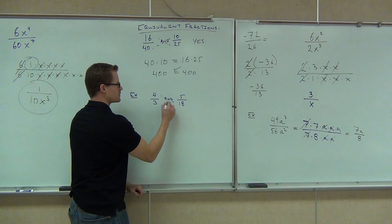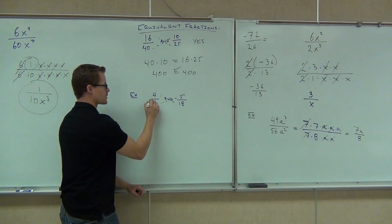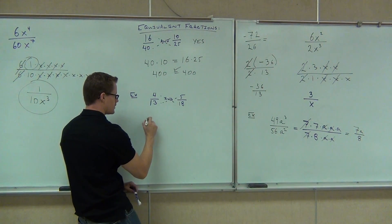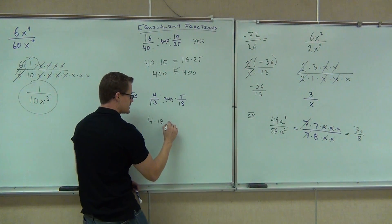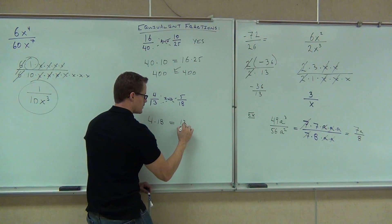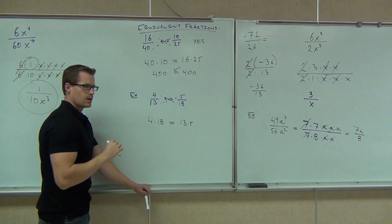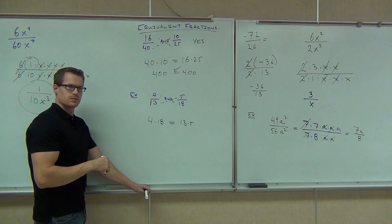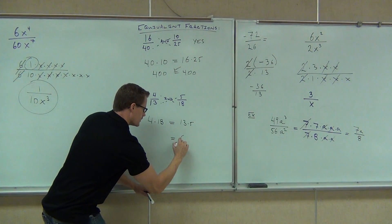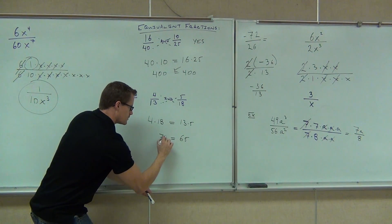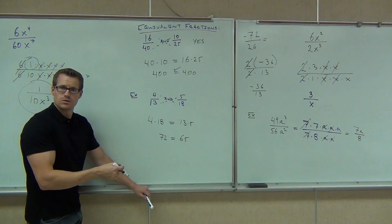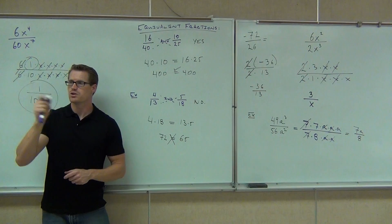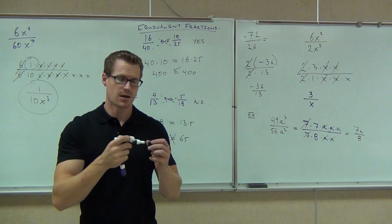Compare that to this — sorry, that's supposed to be 13. Four times 18, thirteen times five — how much is four times 18 or thirteen times five? Sixty-five. And this is 72. Are those equal? No. Then these are not equivalent fractions. That's how you tell whether fractions are equivalent or not: cross multiply — if they're the same, equivalent fractions; if not, they're not.